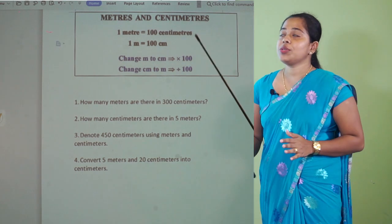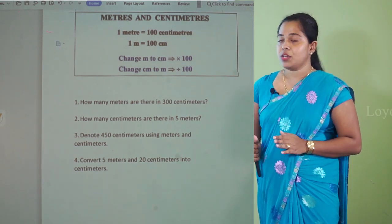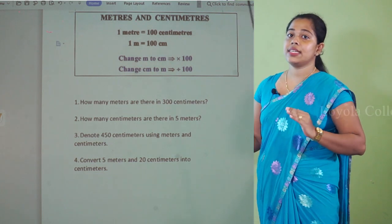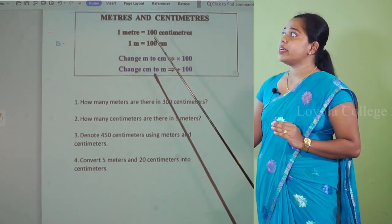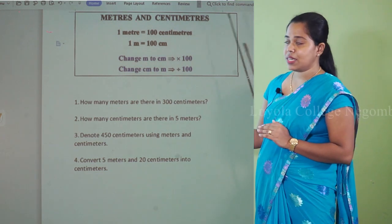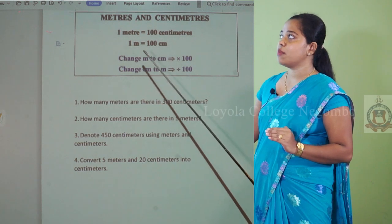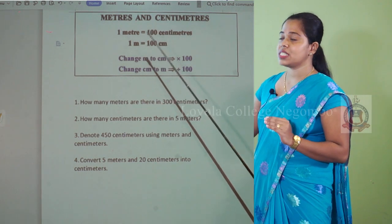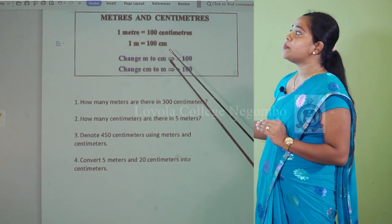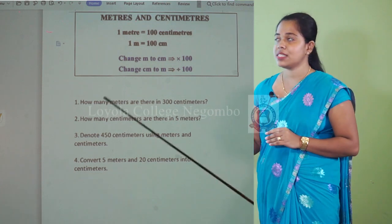Now Puti, you need to keep these things in your mind. That is: 1 meter equals 100 centimeters. We use simple m to denote meter, and we use simple cm to denote centimeters.